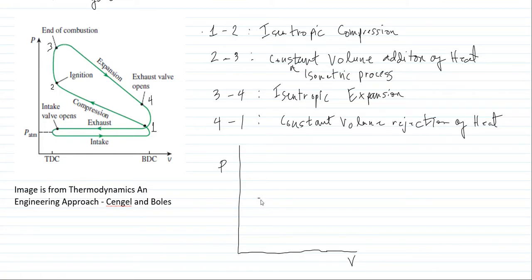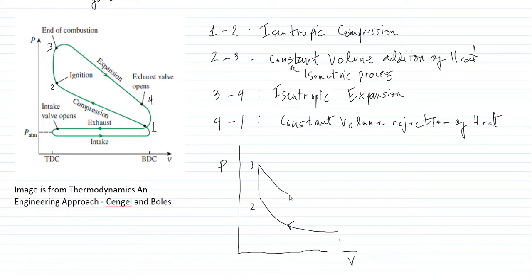Point 1 to 2 is a curve. Then we have a constant volume process — a vertical line — from point 2 to point 3. Then a curve again for isentropic expansion from point 3 to point 4. And from point 4 to point 1 is again a vertical line, which represents the rejection of heat.